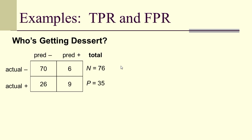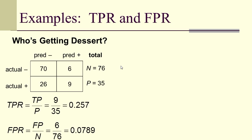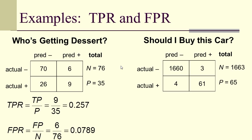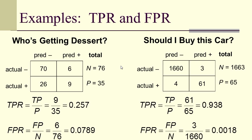For who's getting dessert, the true positive rate is 9 over 35, which gives 0.257. The false positive rate is 6 over 76, which is 0.0789. For should I buy this car, the true positive rate is 61 over 65, that's 0.938. The false positive rate is 3 over 1,663, and that's 0.018.